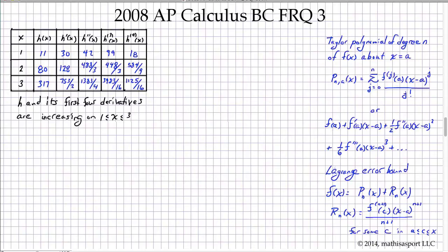So let's go ahead and start with part A. We need to write the first degree Taylor polynomial for h about x equals 2. So first degree I'm going to call this P1 of x. And we have here the definition of the Taylor polynomial. They asked us to write it about x equals 2. So it's going to be h of 2 plus h prime evaluated at 2 times x minus 2.